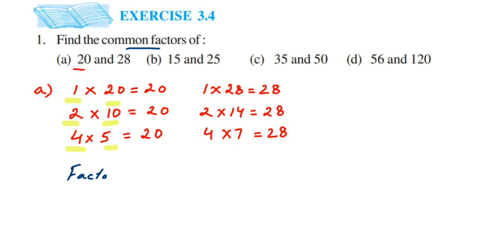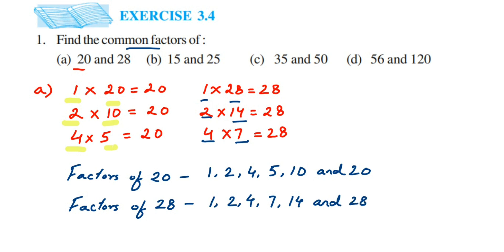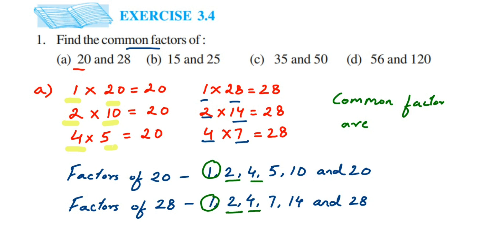Factors of 20 are: 1, 2, 4, 5, 10, and 20. Factors of 28 are: 1, 2, 4, 7, 14, and 28. Now we have to write down the common factors — common means which are present in both. So circling the common ones: 1 is always a common factor, 2 is also common, and 4 is also common. Apart from that, there is no other common factor. So common factors are 1, 2, and 4.